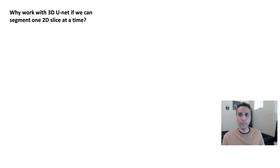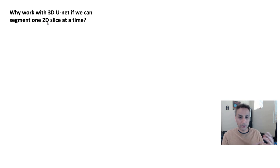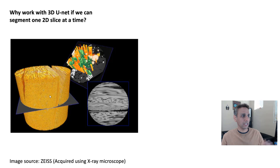Now let's have a quick look at why we need 3D U-Net to begin with. In the past we did one 2D slice at a time. If you have a volume, you can pick your plane — X, Y, or Z — and work with one 2D plane at a time. But why 3D U-Net? Well, if your volume is isotropic, meaning it looks the same no matter which direction you cut, then doing it one 2D slice at a time does make sense if your features are isotropic.